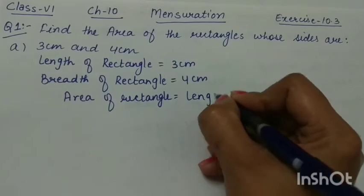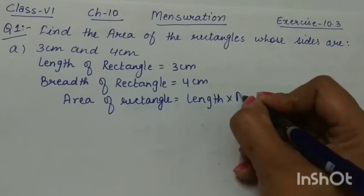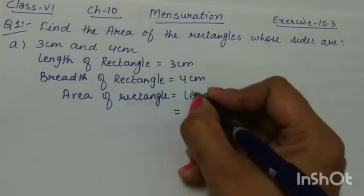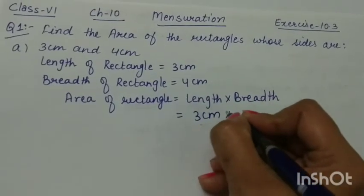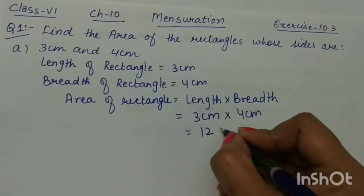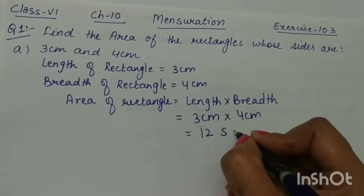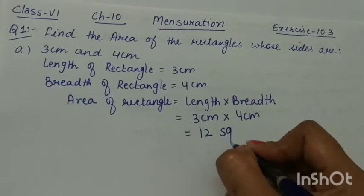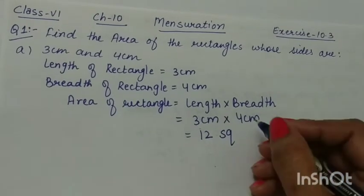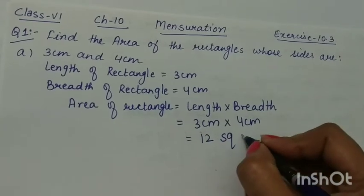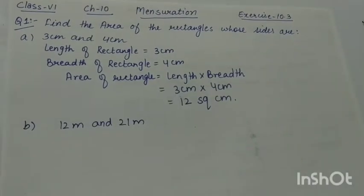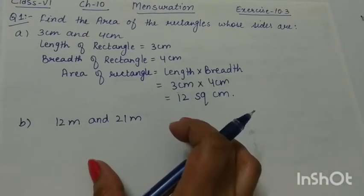Area of rectangle is length multiplied by breadth. Length is 3 centimeters and breadth is 4 centimeters, and 3 times 4 is 12. The units of area are square units, so this will be 12 square centimeters.